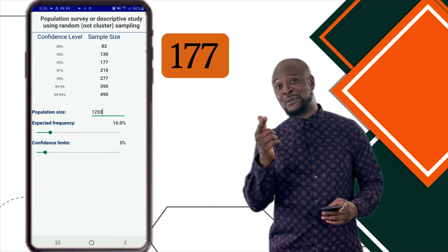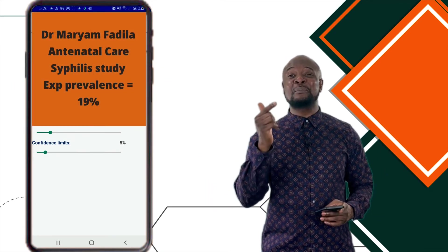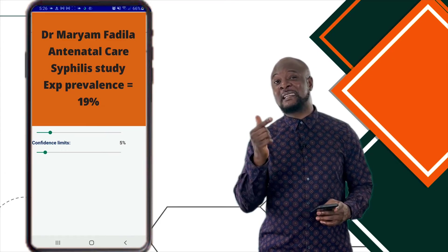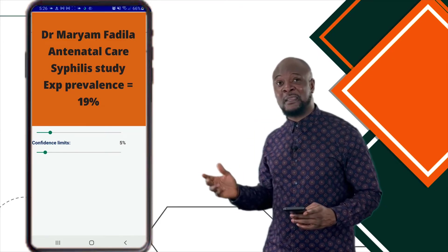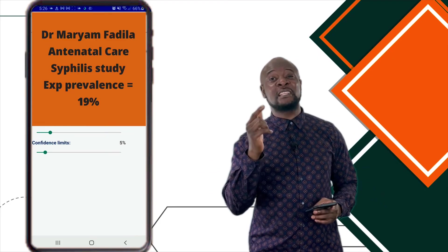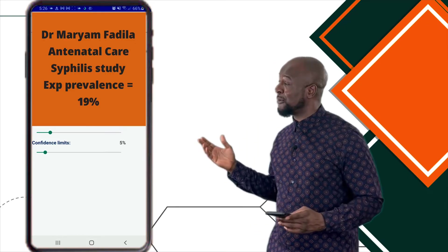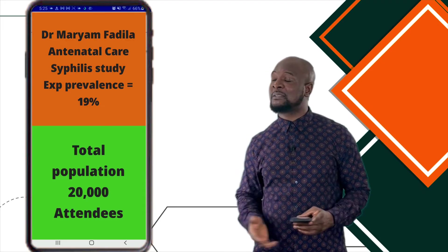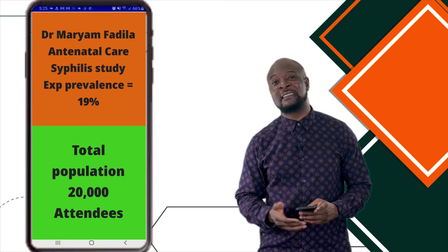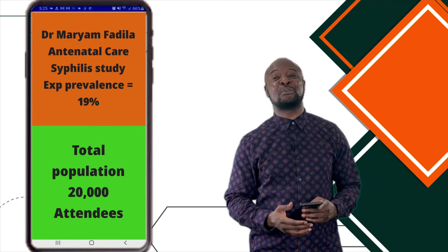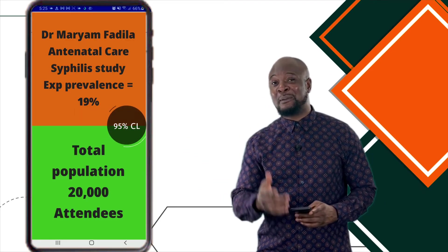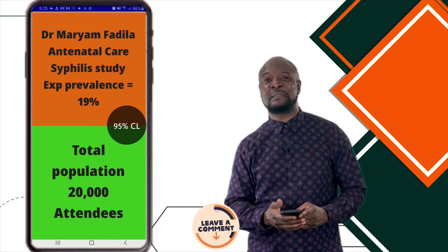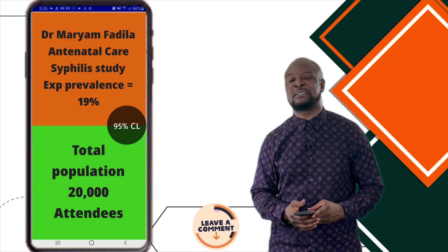Now it's your turn. What is the minimum sample size required for Dr. Miriam Fadila for an antenatal care syphilis study, when the expected prevalence was 19% from a previous study, and the population of ANC attendees was 20,000 women, at a 95% level of confidence? Please put your responses in the comment section below — I'll be looking out for your responses.